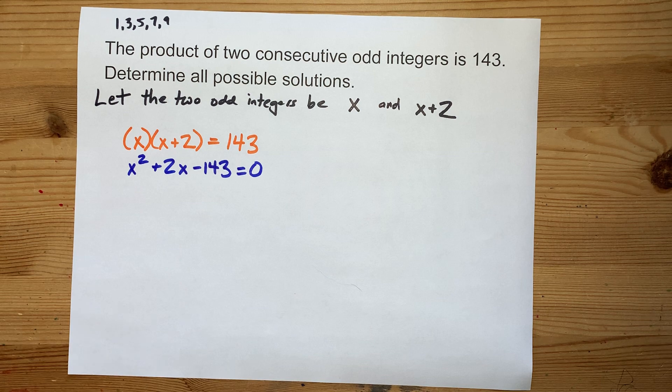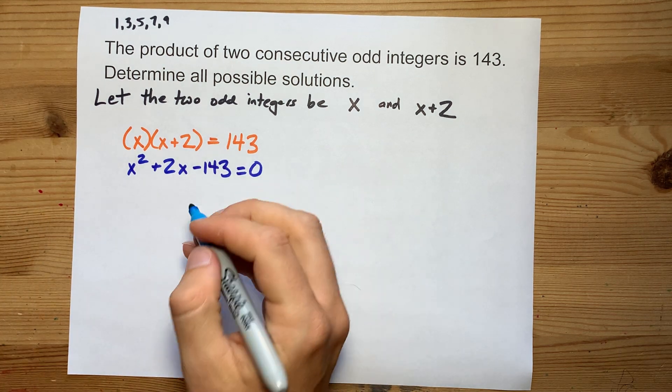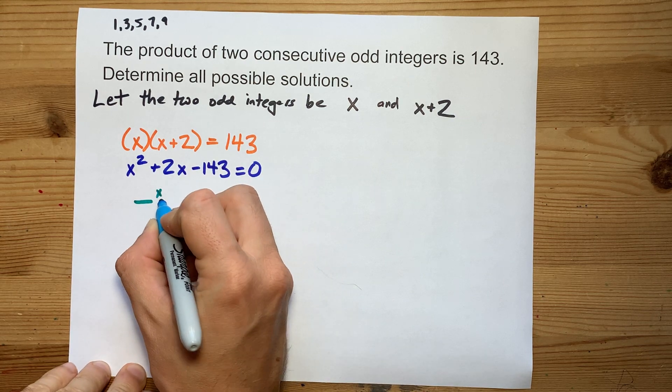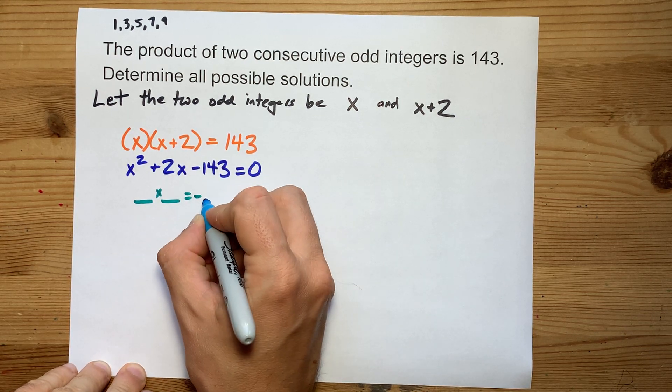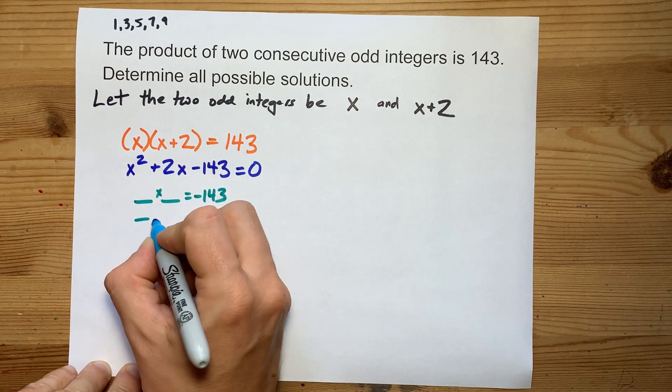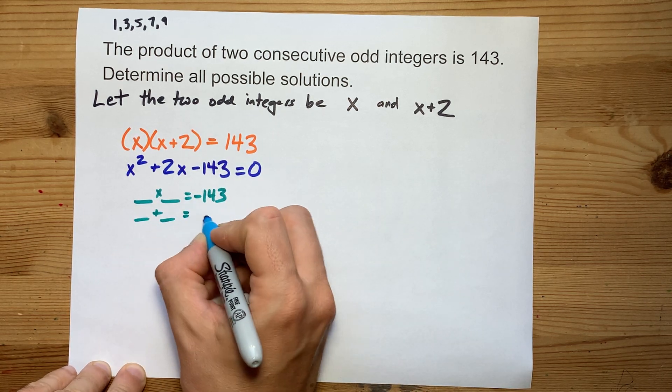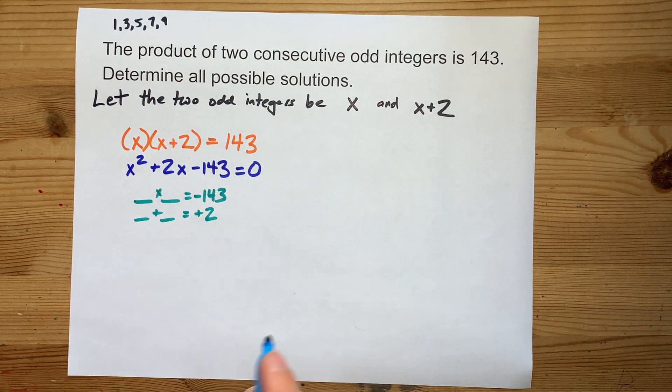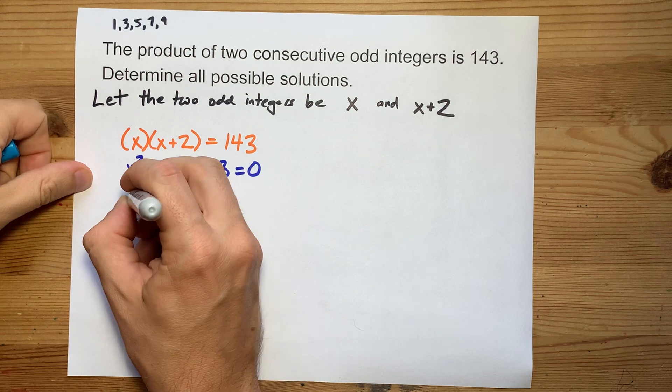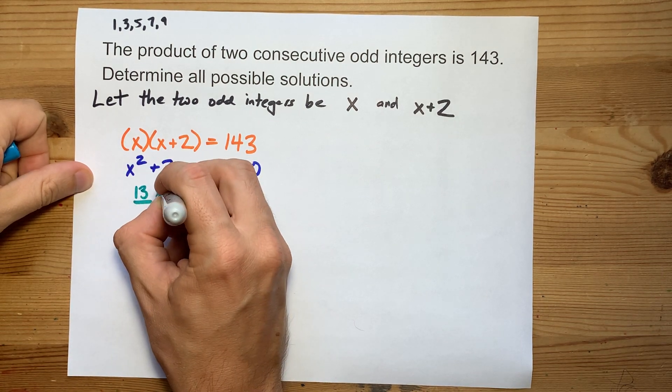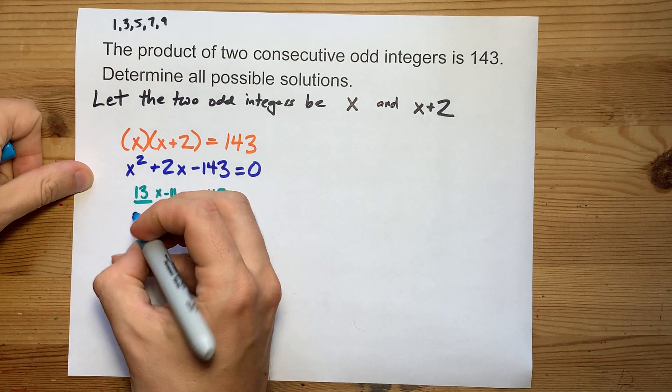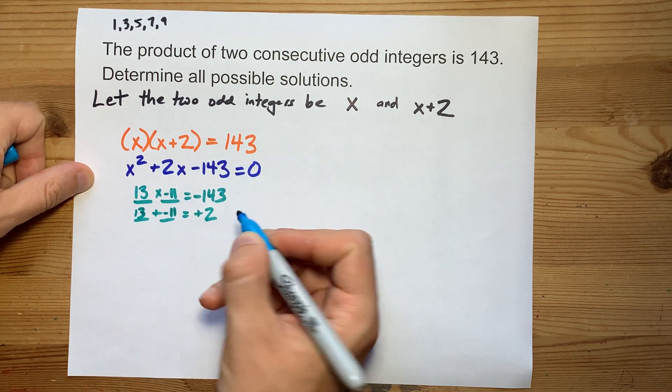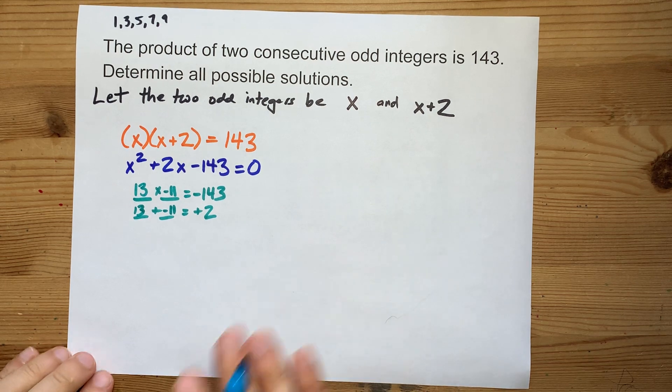I happen to know that this one factors. We're looking for two numbers that multiply to give negative 143, and those same two numbers will add to give us positive 2. Now, I know what those numbers are. It's positive 13 and negative 11. Positive 13 plus negative 11 is 13 minus 11, which is positive 2. It all works out.